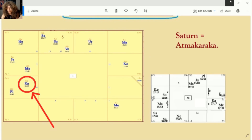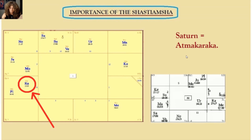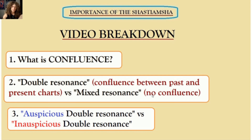That was a condensed preview of what we'll be talking about in this video. Let's reel back and look from the beginning. First, we'll talk about confluence. Second, double resonance — confluence between the past and present charts where there are similar themes, similar Rahu principles between the D60 and the D1 or D9. Mixed resonance means there's no confluence between past and present incarnation. Finally, we'll discuss how to define whether double resonance is auspicious, meaning constructive, or inauspicious, meaning debilitating.